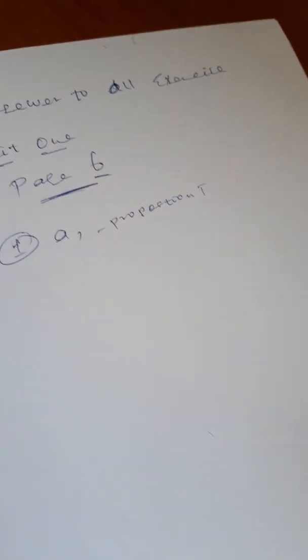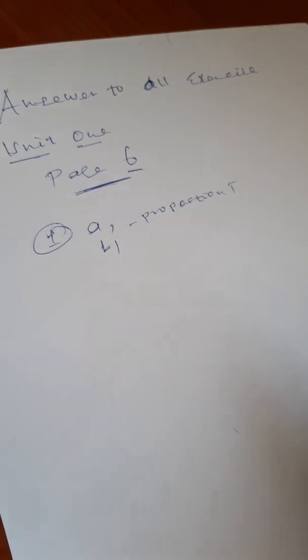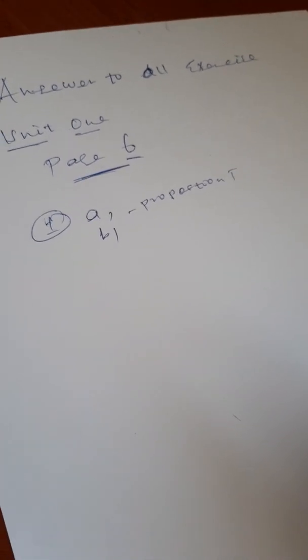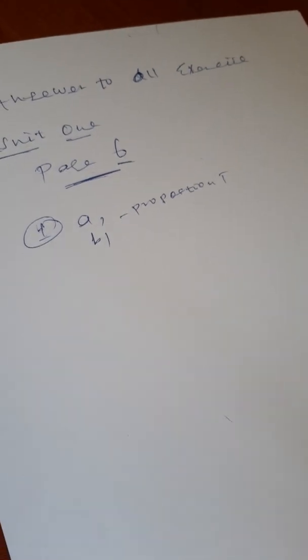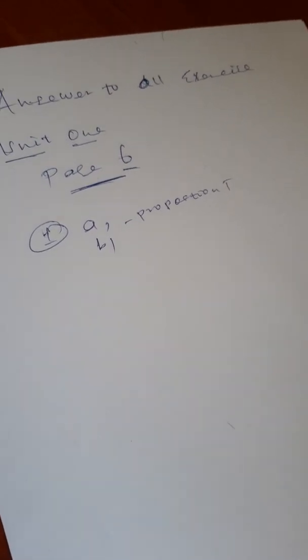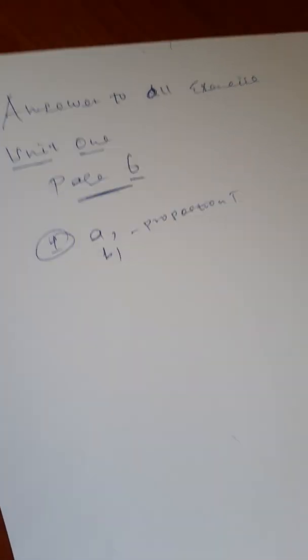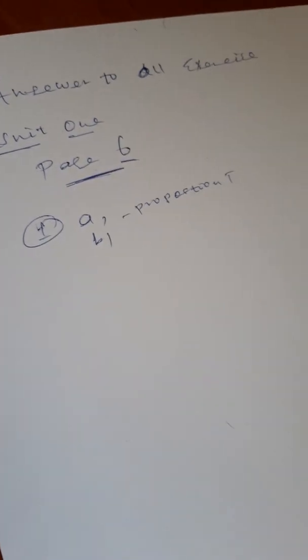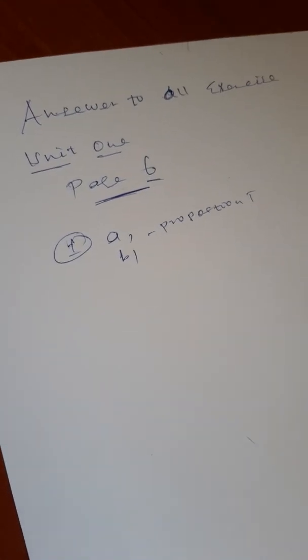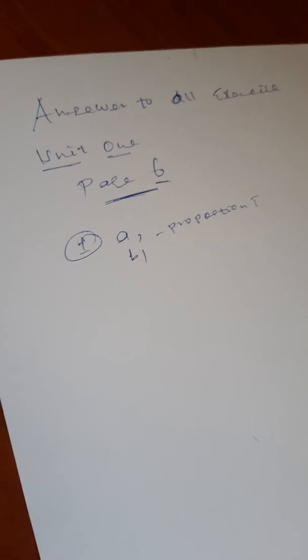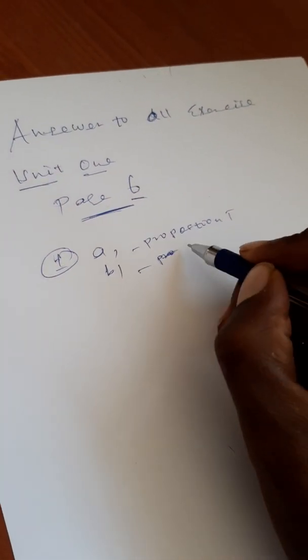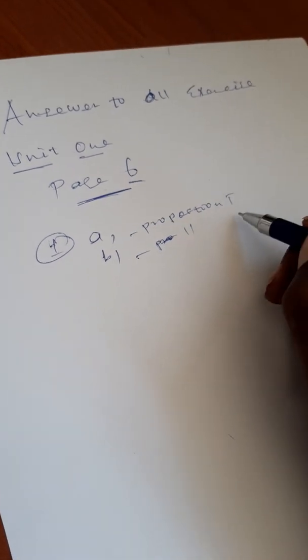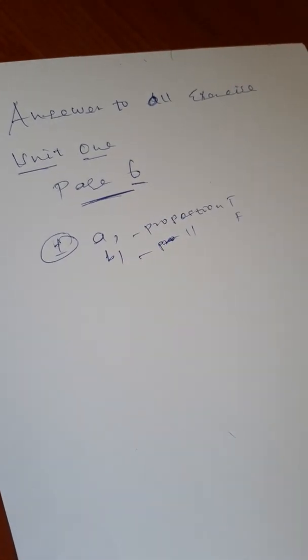Zero is an even number. Zero is not odd, but is it even? The truth value is false. It is a declarative sentence, so it is a proposition with truth value false.